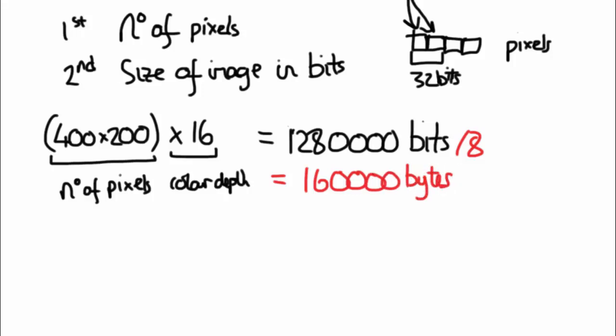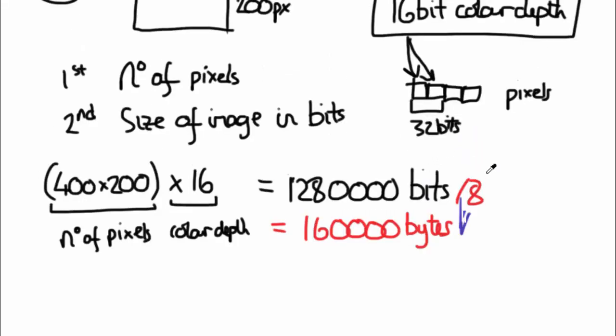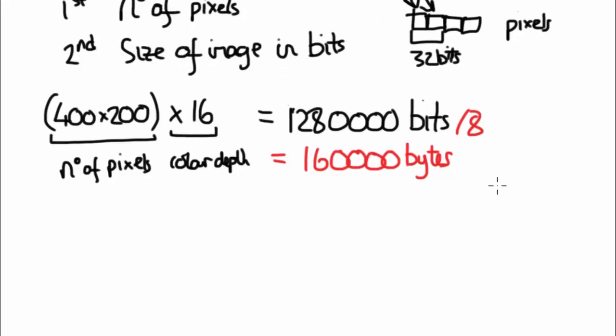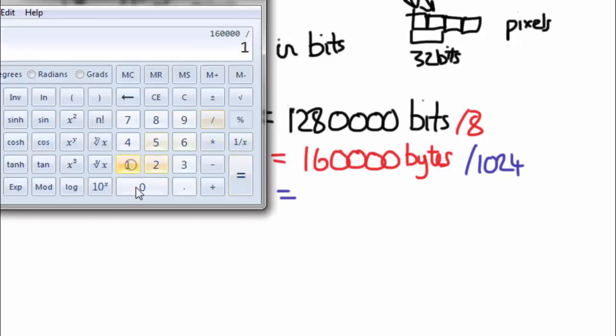That's 160,000 in bytes. Again, that's still far too big, so what we'll do is we then divide that by 1024. And if I divide that by 1024, this will give it in kilobytes, so that's 156.25 kilobytes.